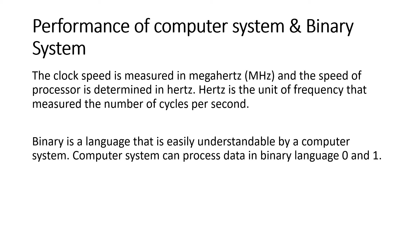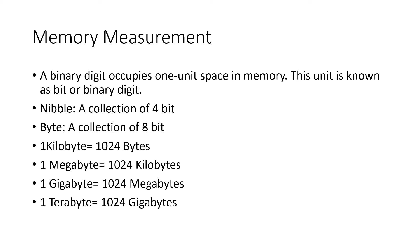Binary system — binary is basically a language that is required to be understood by a computer system. A computer system can easily process data in binary language, which uses 0 and 1. It is also called machine language. Memory measurement — a binary digit that occupies one unit of space in memory is known as a bit, or binary digit.